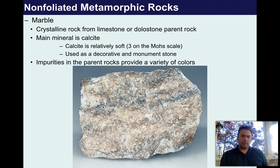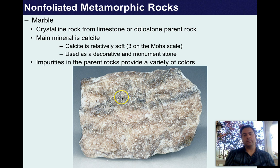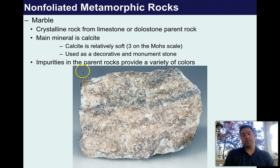Marble is a crystalline rock from a limestone or dolostone parent rock. Limestone is calcium carbonate and dolostone is magnesium-calcium carbonate, but the main mineral in marble is calcite. It's a relatively soft rock — hardness of 3, while quartz is 7 — used as a decorative and monument stone. Impurities provide a variety of colors: here we can see bands of red, zones of white, and a zone of gray to bluish gray.